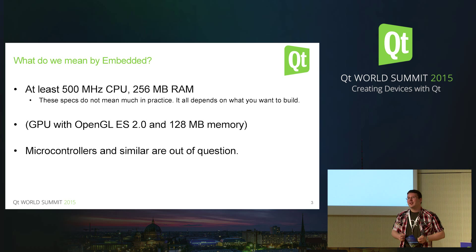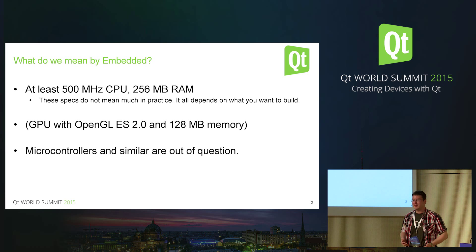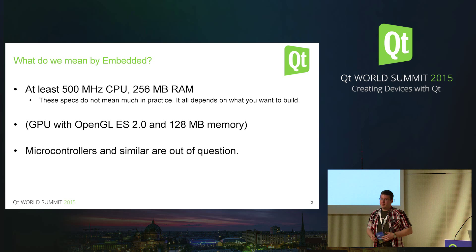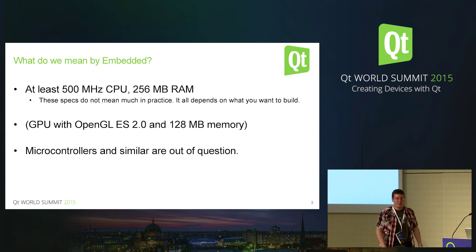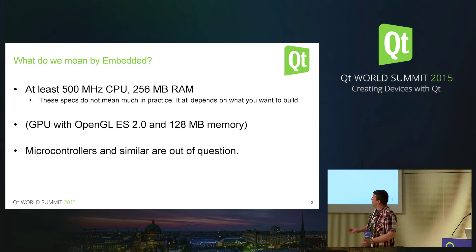You could say Qt needs a 500 MHz CPU, but that means nothing because it depends what you are targeting — it might be good enough for some things, but surely not for running WebEngine. Similarly for graphics, we say you absolutely need a GPU with OpenGL — though that's in parentheses, because technically we do have some solutions for doing stuff without a GPU.